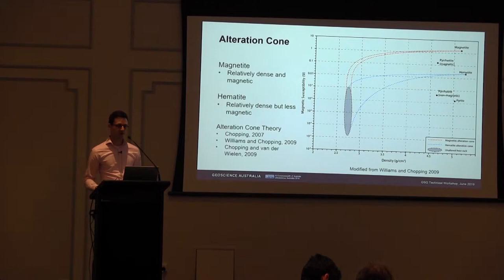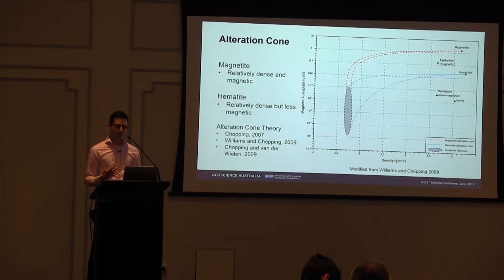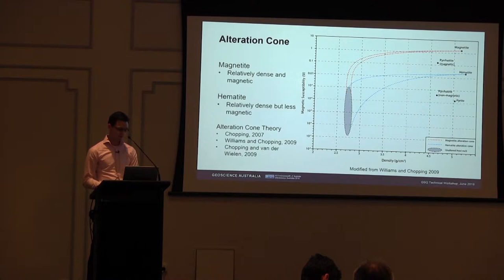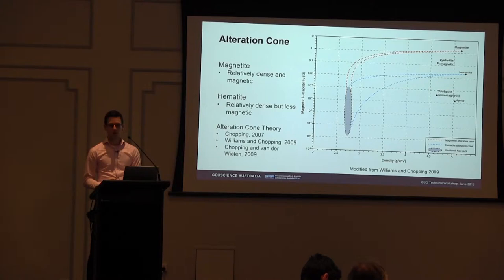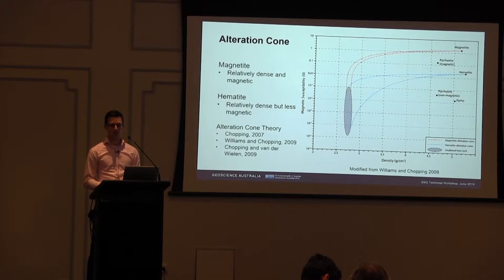One of the methods we've adopted is the alteration cone theory. This theory is based on the fact that a rock's mineralogy largely controls its physical properties. In the diagram you can see two physical properties: magnetic susceptibility versus density. We have a theoretical unaltered host rock, and two cones varying towards hematite and magnetite respectively. These alteration cones show that if an unaltered host rock undergoes hydrothermal alteration, those physical properties will start trending towards either magnetite or hematite. The challenge is to define those alteration cones.